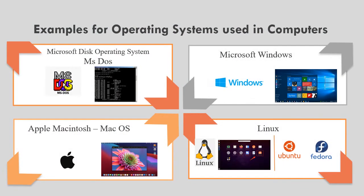Examples of operating systems used in computers: Microsoft DOS, MS-DOS, Microsoft Windows, Apple Macintosh or Mac OS, and Linux. Ubuntu and Fedora are operating systems produced using Linux.